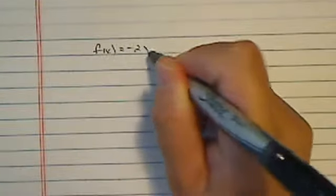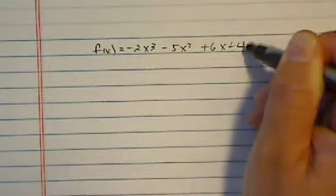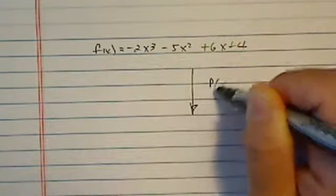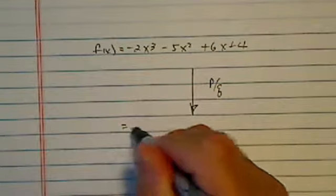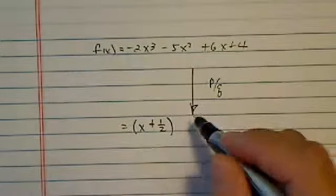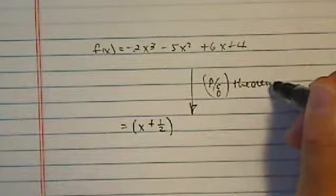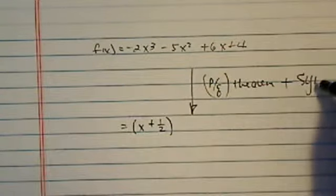So back over here, we had this big long polynomial to start with. Let's see if I can still find it. Minus two x cube minus five x squared plus six x plus four. We're using the PQ theorem to find that one of the roots is minus half.